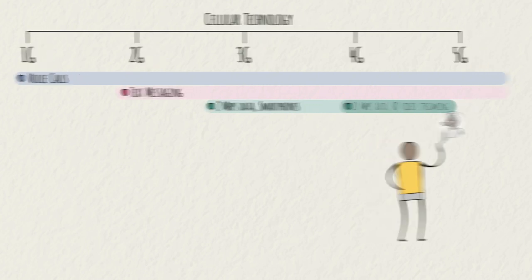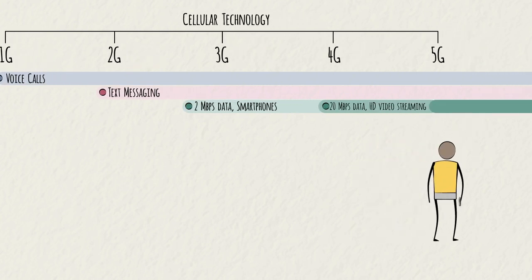We're currently at the beginning of the fifth generation of cellular technology, which will exponentially increase the amount and speed of data sent across the wireless network. This will allow us to stay connected with each other in brand new ways that haven't even been invented yet.